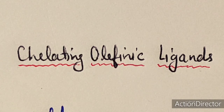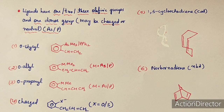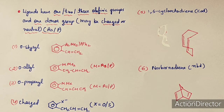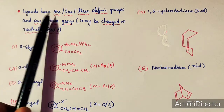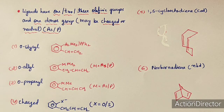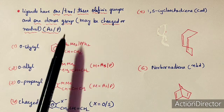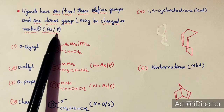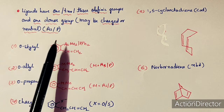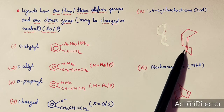We will discuss properties and general methods of preparation of chelating olefinic ligands. These are some examples of chelating ligands — not all, but representative ones. Chelating ligands may have one, two, or three olefinic groups, or more than one olefinic group, or one donor atom which may be charged or neutral. Generally, the donor atoms present in chelating ligands are arsenic or phosphorus.